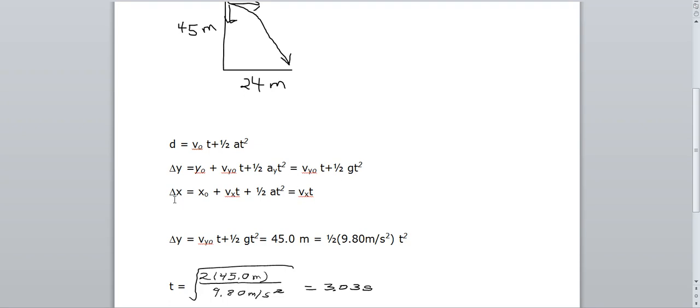First, your displacement in the x direction is initial coordinate of your x plus velocity in the x direction times t plus one half at squared. Well, there is no acceleration in the x direction and your initial point is zero. So your delta x is equal to velocity in the x direction times t.